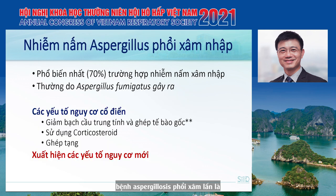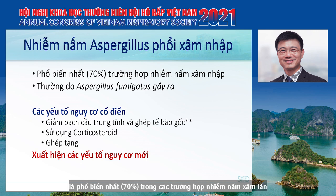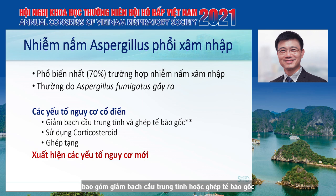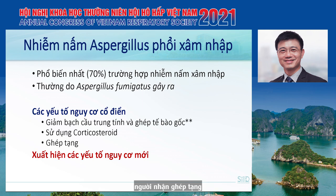Invasive pulmonary aspergillosis is the most common invasive mold infection of the lung. It is caused mainly by Aspergillus fumigatus, or sometimes by Aspergillus flavus and other species. Classic risk factors include neutropenia, stem cell transplantation, corticosteroid use, or solid organ transplant recipients.